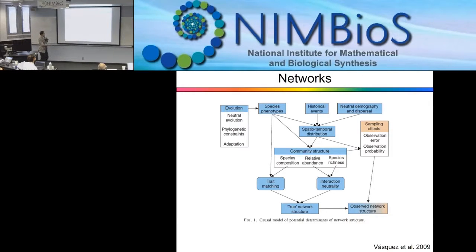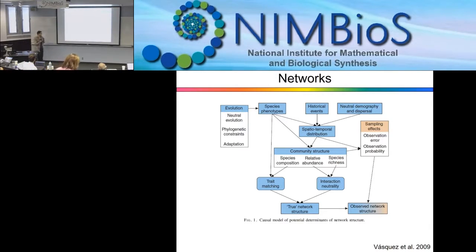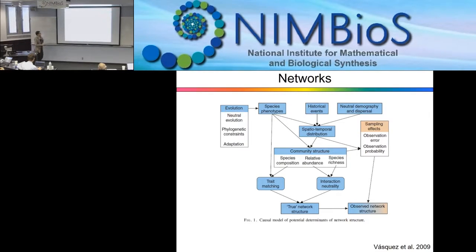To define networks, there are many causalities that bring us to spatial, phylogenetic, or ecological networks: evolution, species interaction, spatial-temporal dynamics, and trait-based relationships. All these aspects bring us to networks that we are trying to address, measure, and understand.